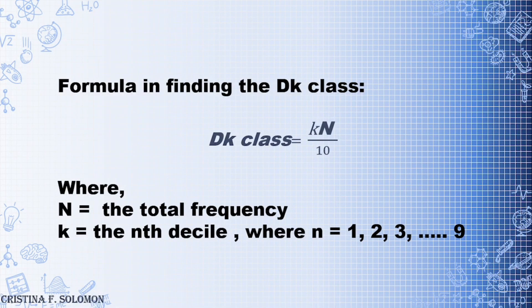The formula for finding the DK class position is: DK class = K × N / 10, where N is the total frequency and K is the Nth decile, ranging from 1 to 9. Decile 1 is equivalent to 10%, decile 2 to 20%, decile 3 to 30%, and so on.